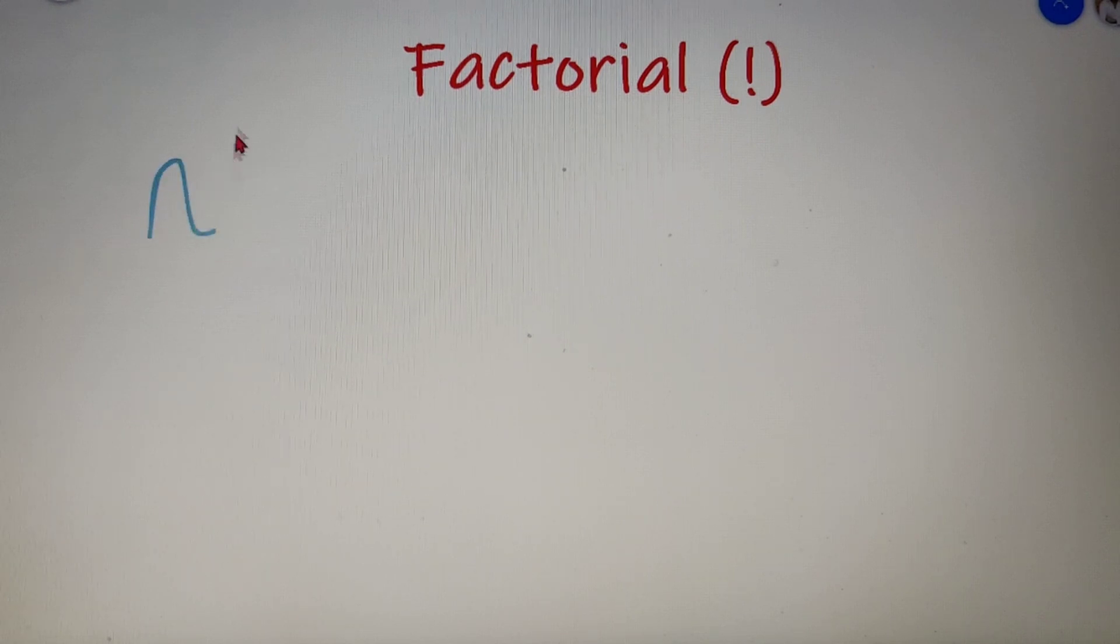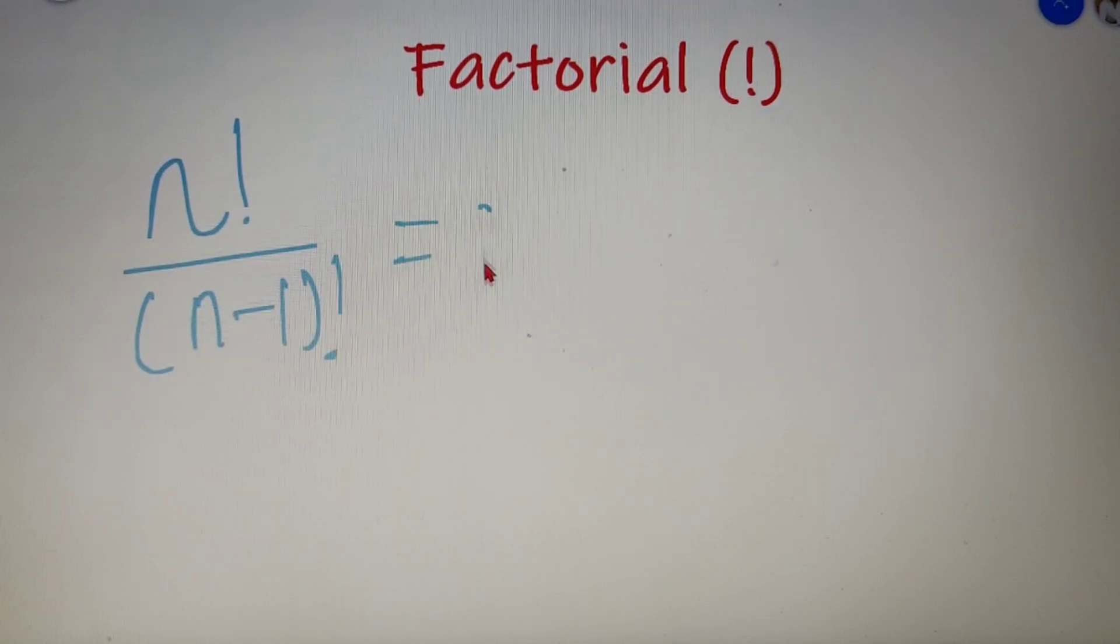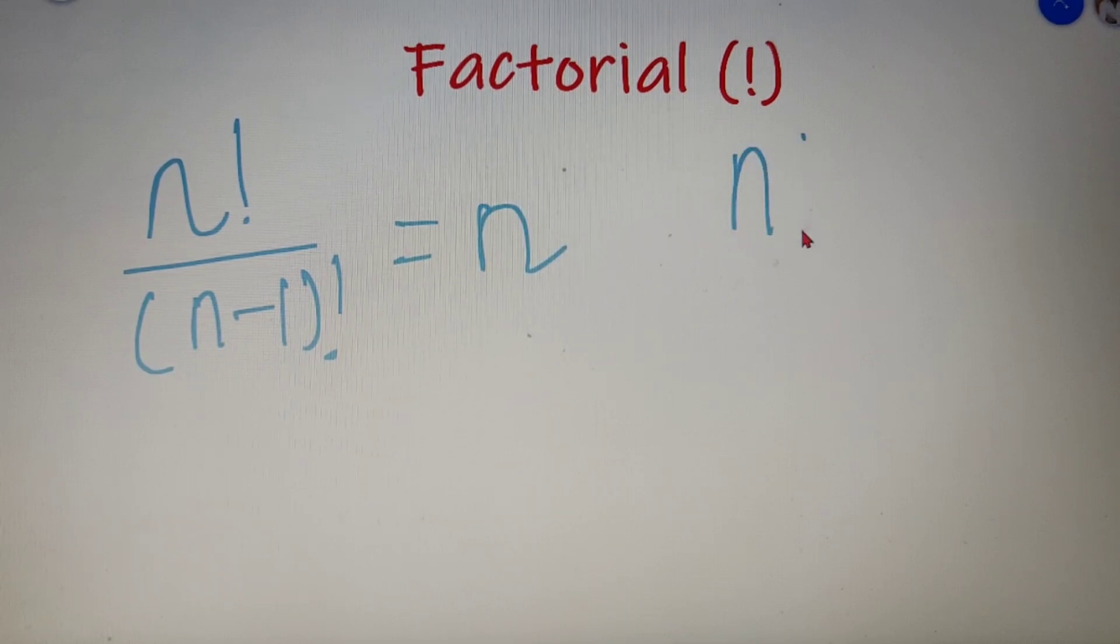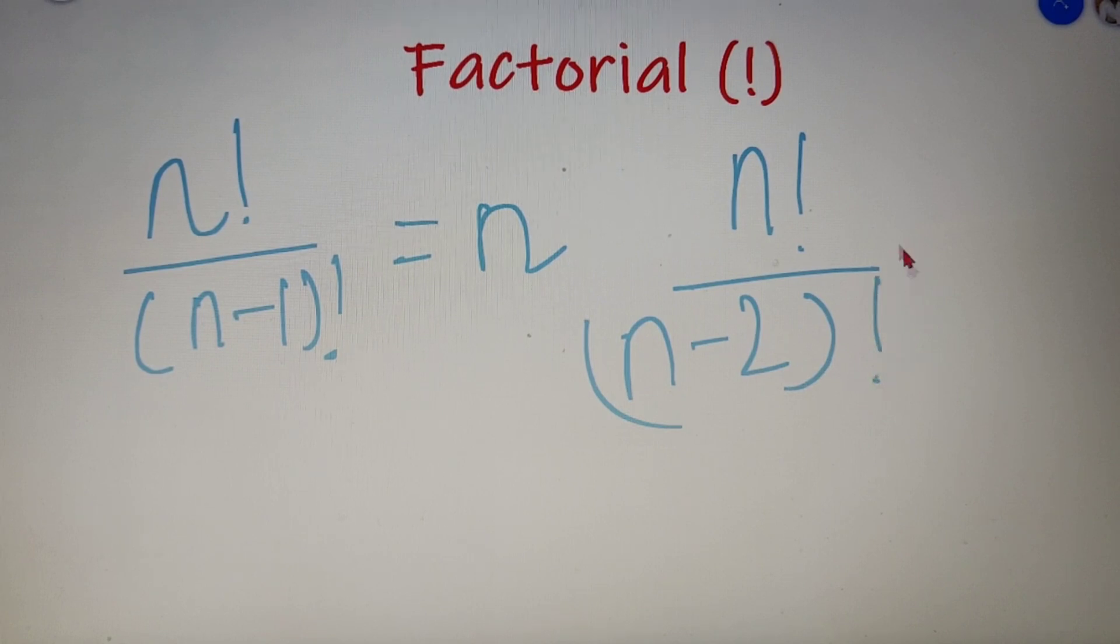The value of n factorial divided by n minus 1 factorial is equal to n. The value of n factorial divided by n minus 2 factorial is equal to n into n minus 1.